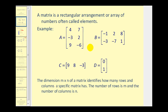Each matrix has a dimension and the dimension m by n of a matrix identifies how many rows and columns a specific matrix has. The number of rows is m and the number of columns is n. That's important because this first number will be rows and the second number will be columns.